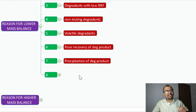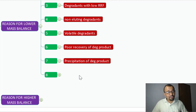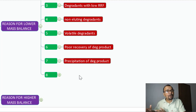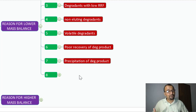Precipitation of degradation products. If your API is soluble in the given solvent system but the degradants generated during treatment do not have adequate solubility in the selected diluent, they will get precipitated out. If you separate out this undissolved mass through filtration or centrifugation during sample treatment, you are going to lose a good amount of mass during analysis, causing a short mass balance.